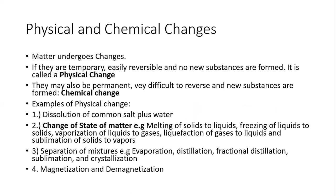We have talked about physical and chemical properties of matter. Now let's talk about physical and chemical changes. Matter undergoes changes all the time — people grow up, we combine things and see reactions. There are two types: physical change and chemical change. For physical change, remember three things: they are temporary, easily reversible, and no new substances are formed.